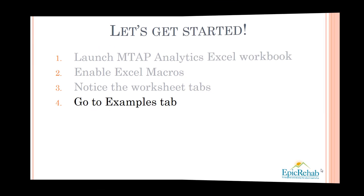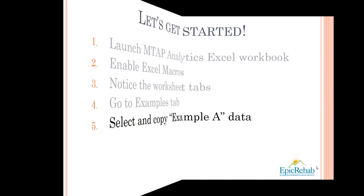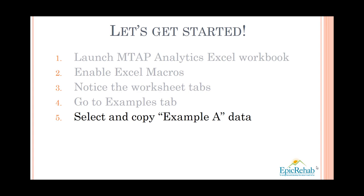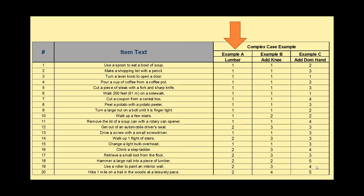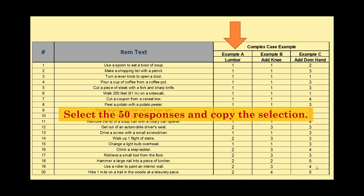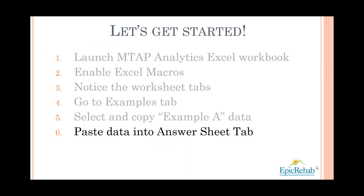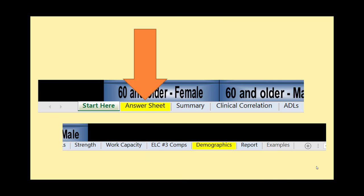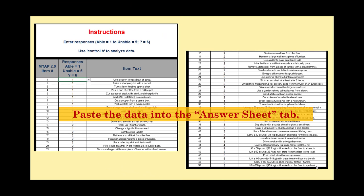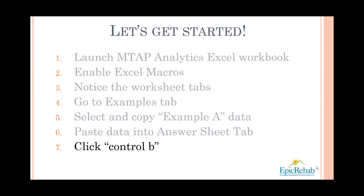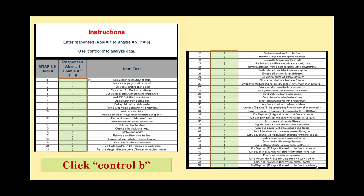Go to the Examples tab and select and copy Example A Data. There are three complex case examples, but for this video lesson we're just going to stick with Example A. Select the 50 responses in this column, copy the selection, and paste the data into the Answer Sheet tab. Once the data are pasted, click Control-B to do the data analysis. When you click Control-B, this is what you'll get.